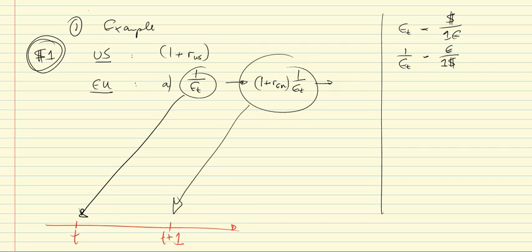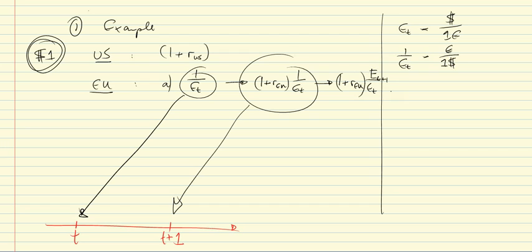You then proceed to exchange that money at time t+1 back to dollars, because you need dollars to make use of the money in the country where you live — presumably the US. You use the whole euro amount to buy dollars, and how many dollars you get is determined by E_{t+1}. So you receive (1 + R_EU) times the ratio E_{t+1}/E_t. To make the investment decision, you simply compare this amount with the US return (1 + R_US): whichever is larger is where you should invest.